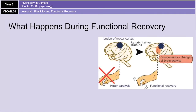What actually happens during functional recovery in the brain? The brain is able to rewire and reorganize itself by forming new synaptic connections close to the area of damage — a bit like avoiding roadworks on the way to work by finding a different route. Secondary neural pathways that would not typically be used to carry out certain functions are activated or unmasked to enable functioning to continue, often in almost the exact same way as before.